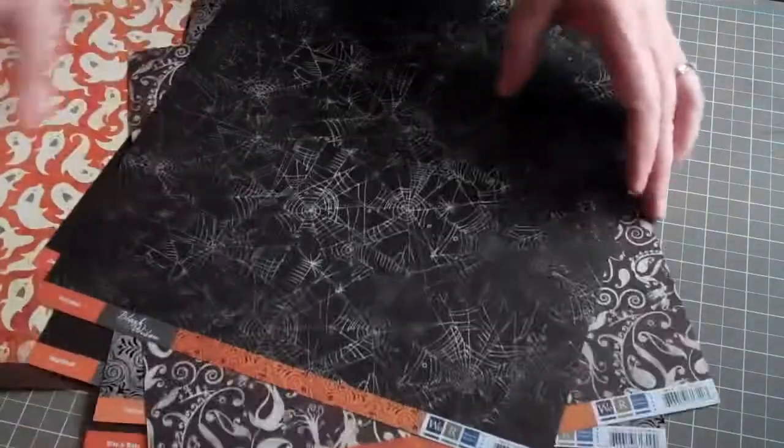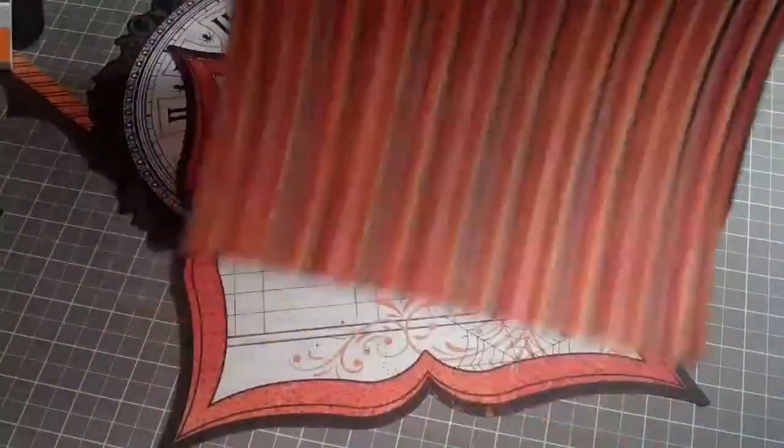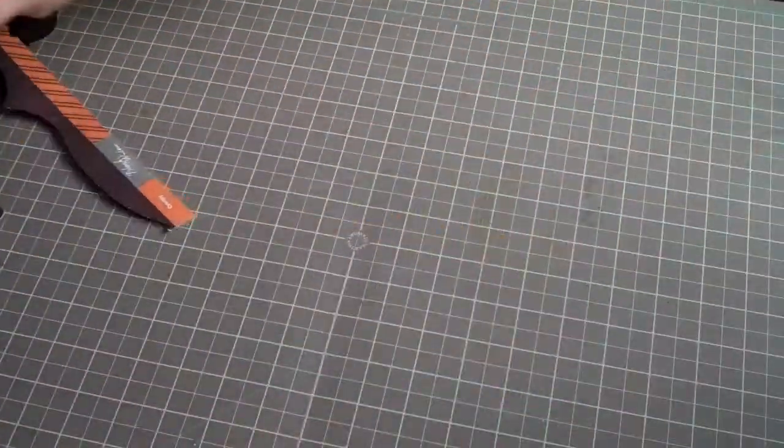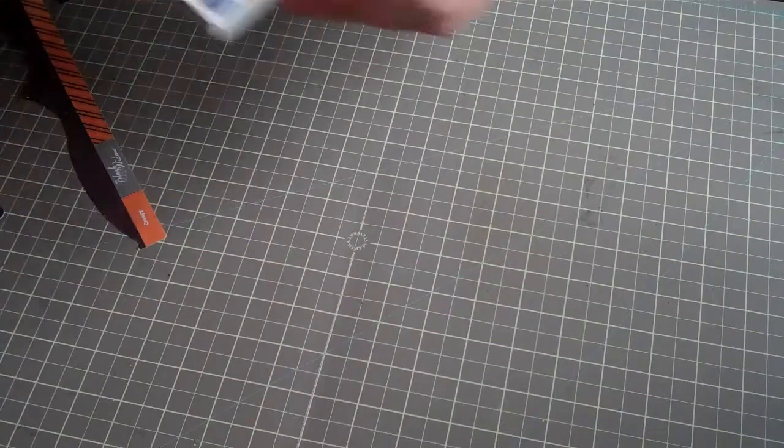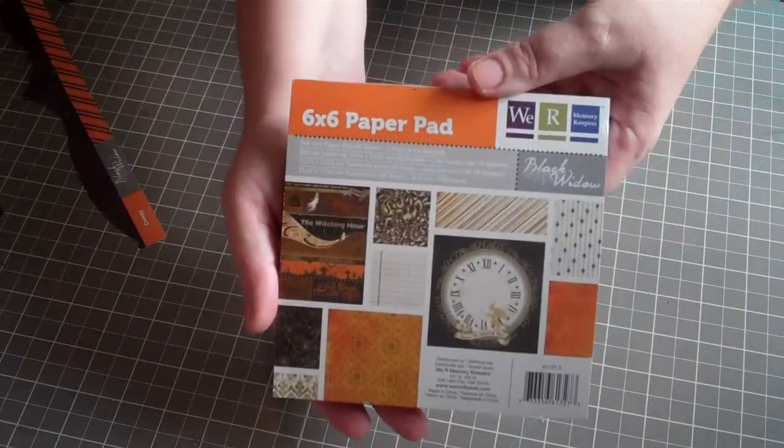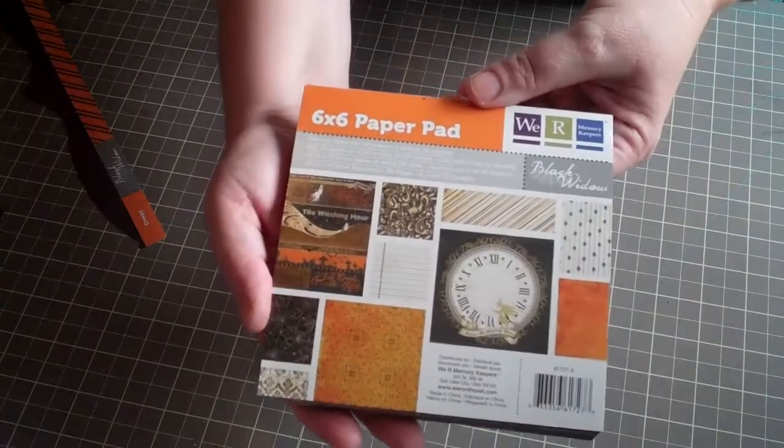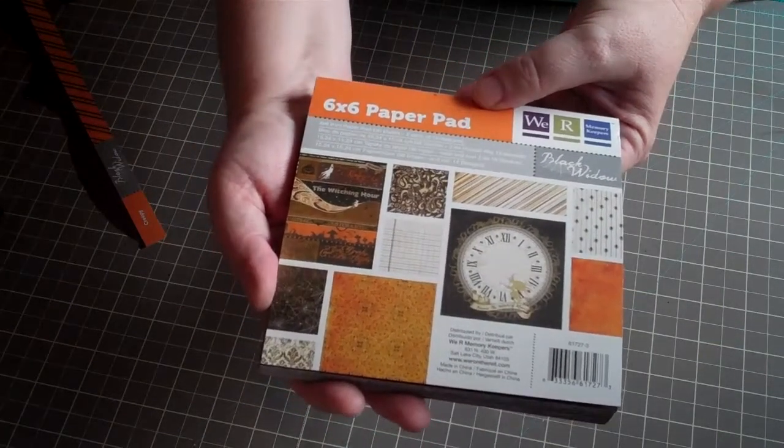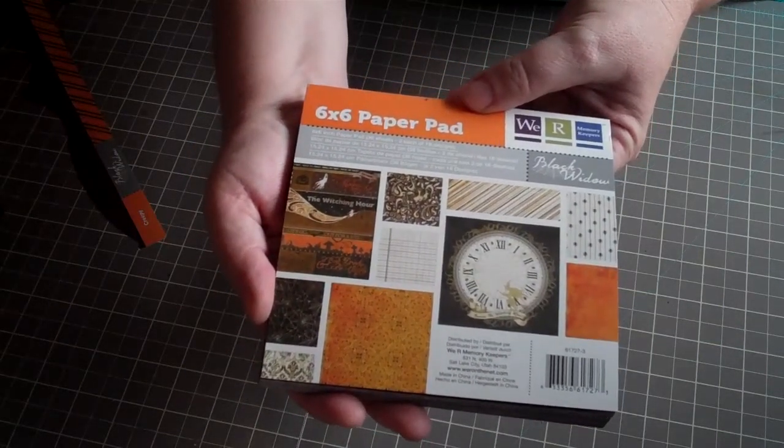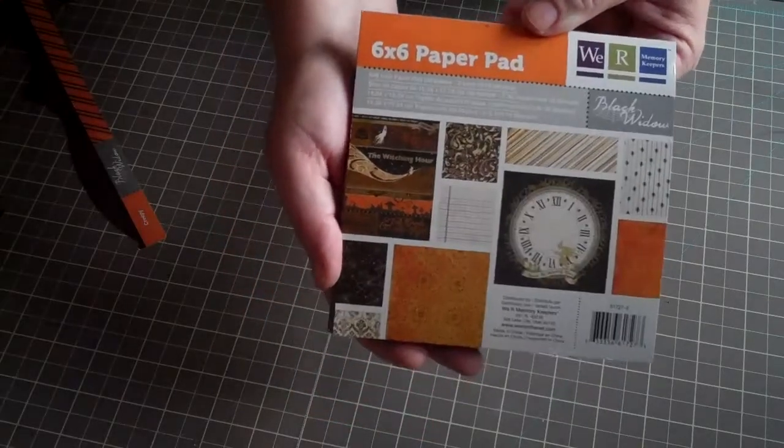So those are all the pattern papers that are included. Then of course we have the coordinating paper pad, the 6x6, and that comes with 36 sheets, which is great for card makers.